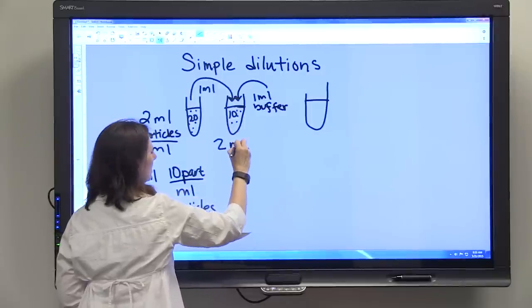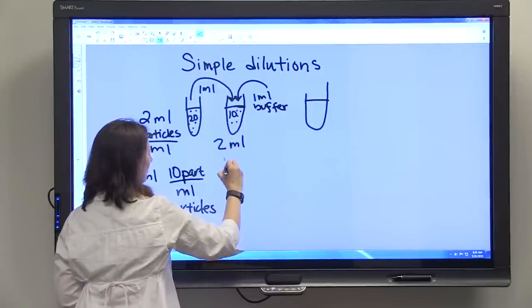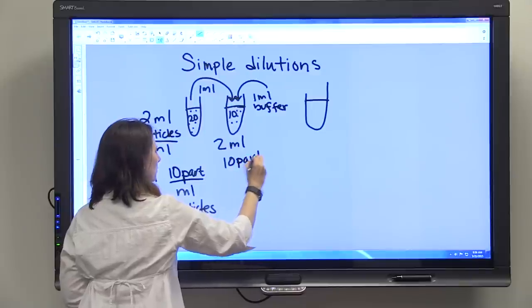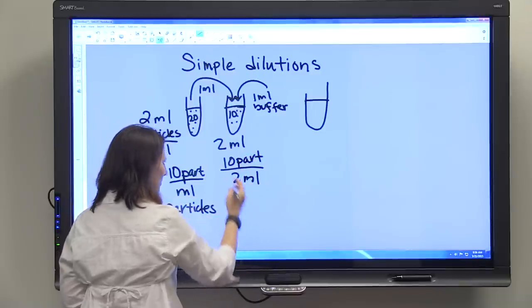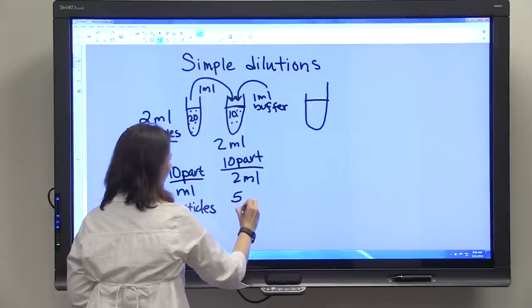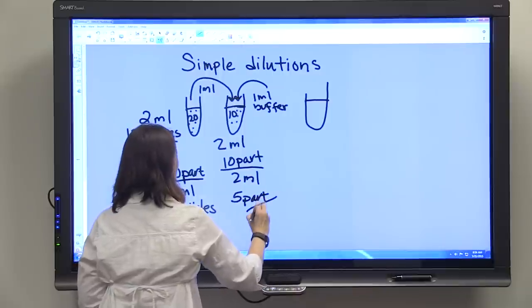So again, here we have 2 ml's with 10 particles per 2 ml's. So we're going to simplify that, we have 5 particles per ml.